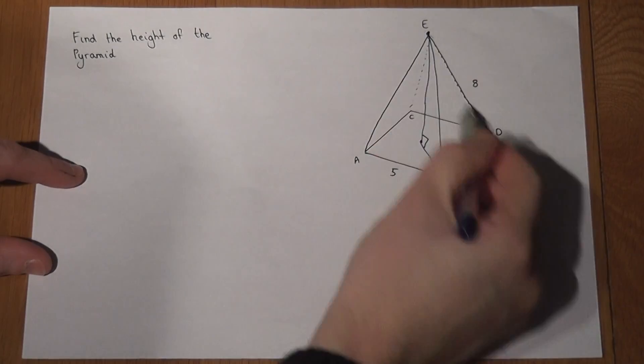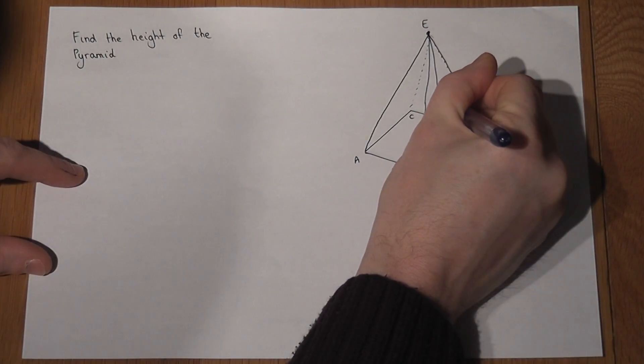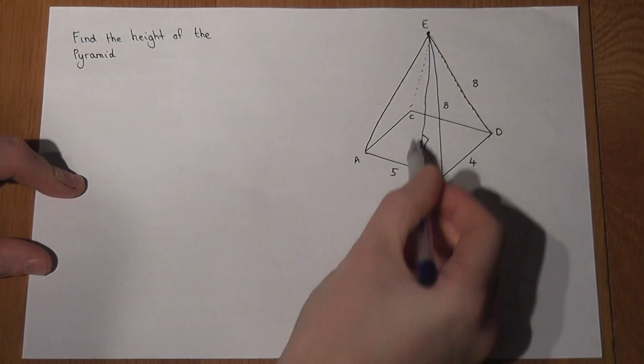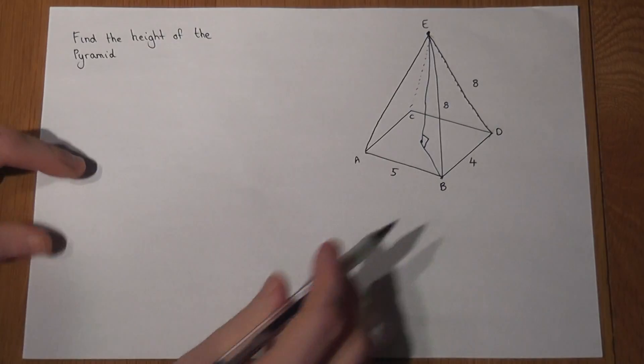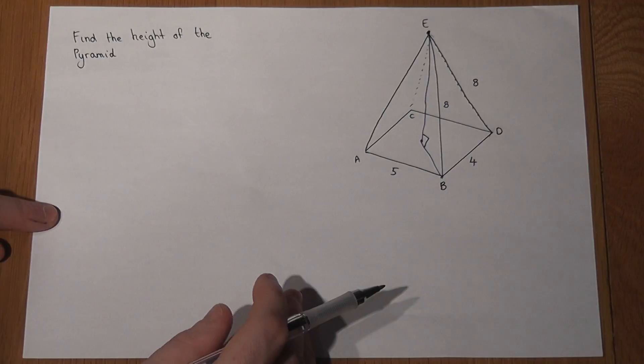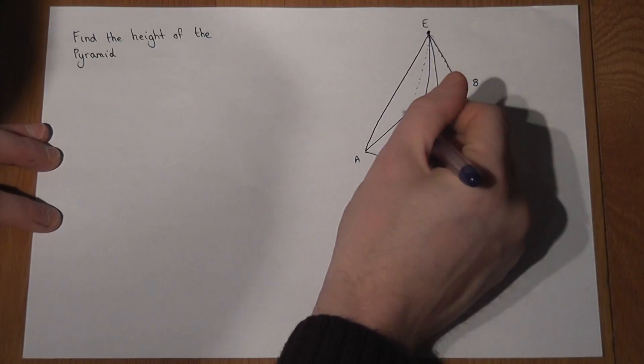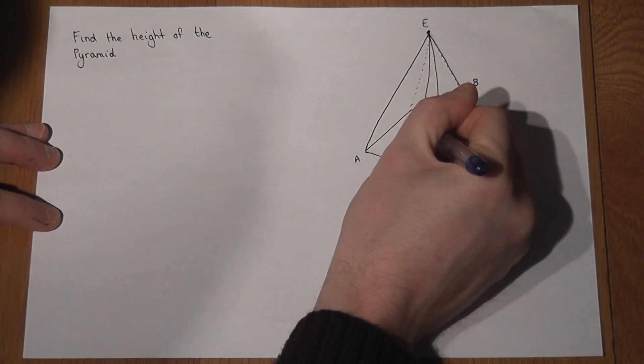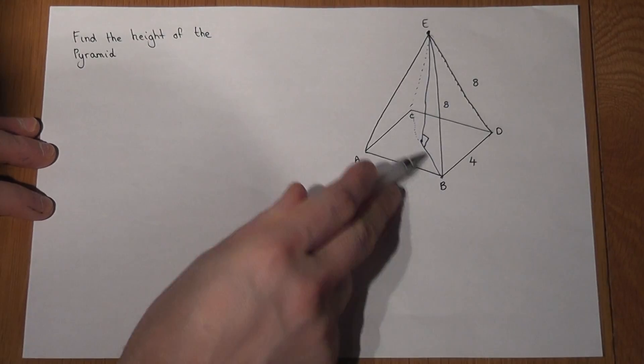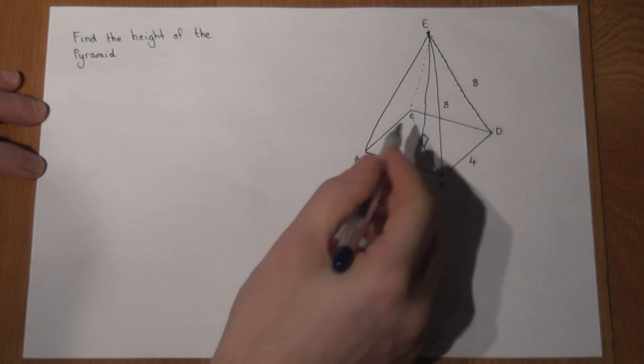I know the slant heights are 8, so this is 8 as well. To find the height, if I knew this length here, I could use Pythagoras. Now to find out this height, we're going to do a couple of steps. The first step is to imagine this whole length across the base from C to B. This length here must be half of that entire length. I'm going to sketch out the following triangle.